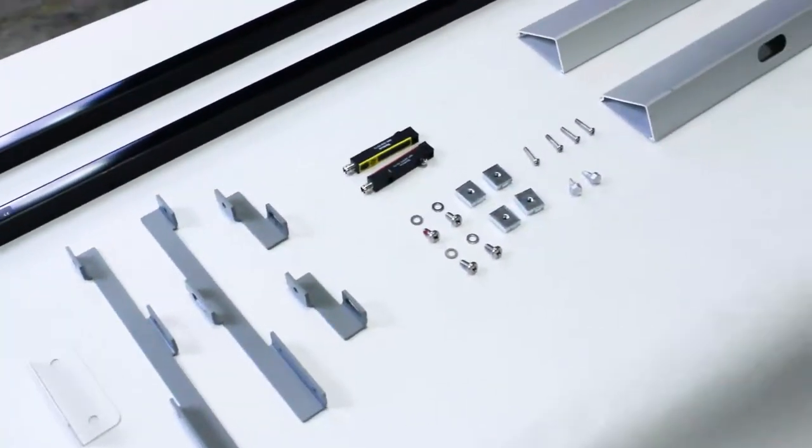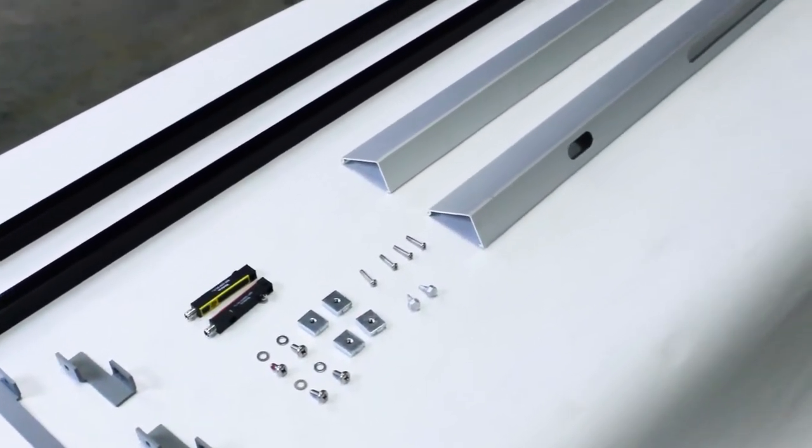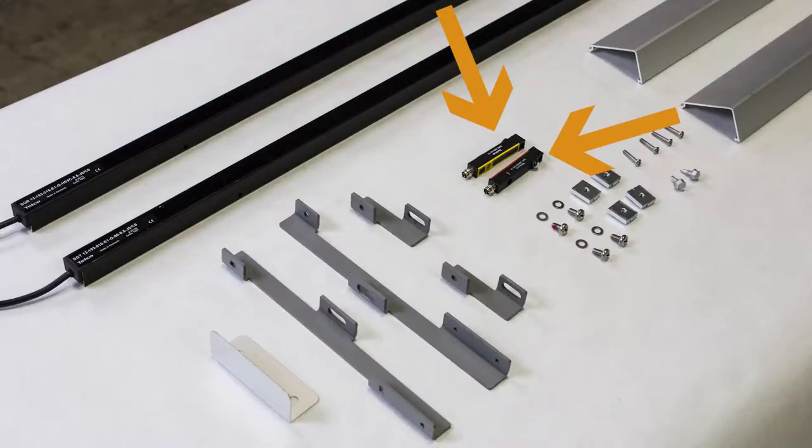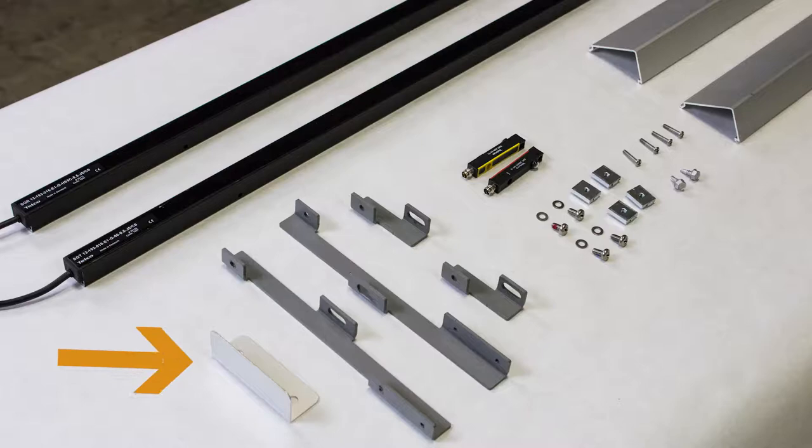First, locate all of the sensor mounting components: light curtains, photo eyes, mounting brackets, bottom bar flag, trim pieces, and hardware.